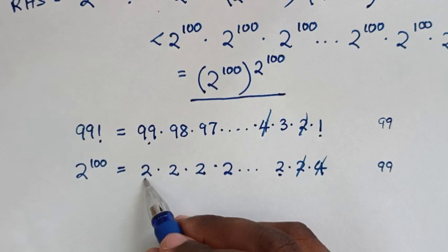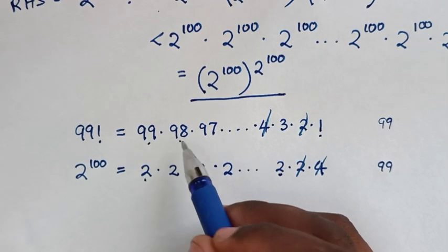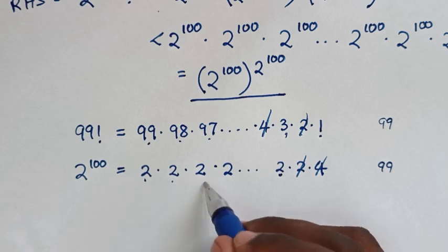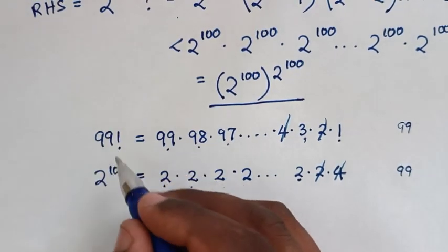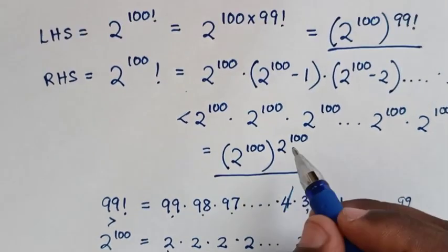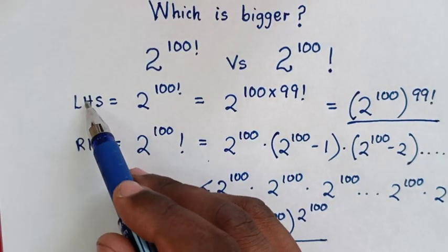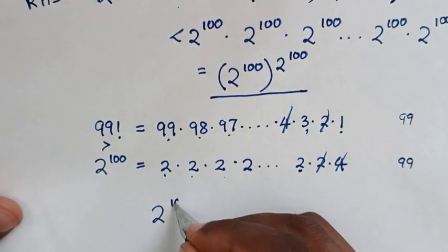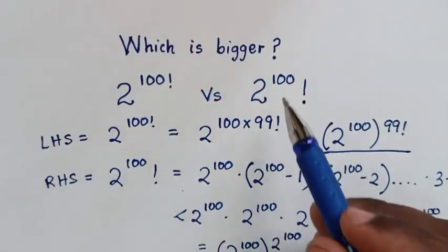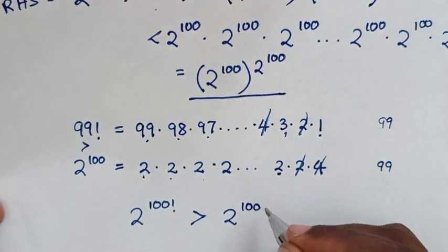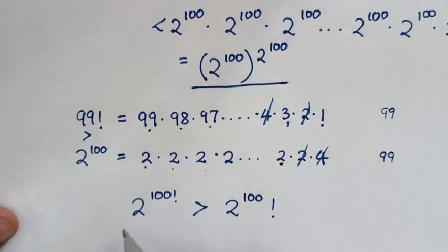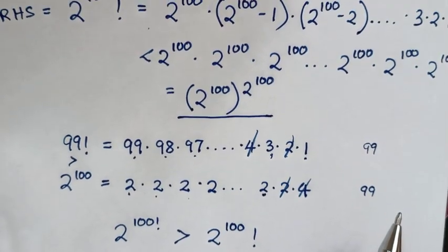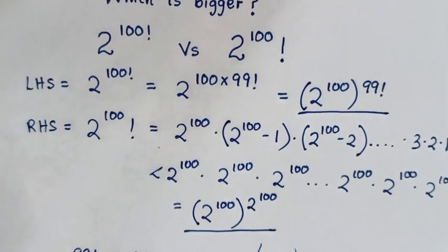We are left with 98 times 97 times 96 and so on, up to times 3, compared against 2 times 2 times 2. Each term on the left is clearly greater than the corresponding 2 times 2 on the right. So the left-hand side is greater than the right-hand side. Therefore, 2 to the power of 100 factorial is greater than 2 to the power of 100, all of this factorial. Thank you — don't forget to subscribe to my channel, and see you in the next video.